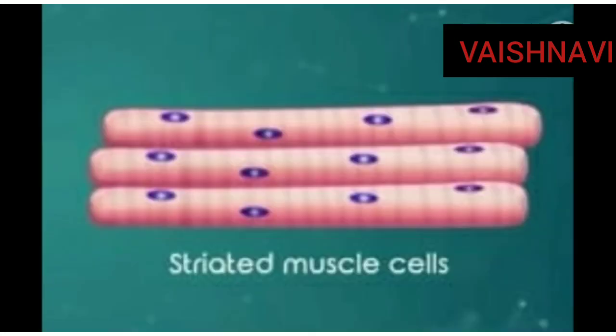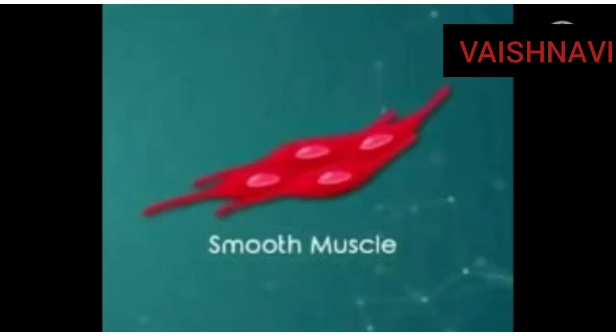First one is striated muscles. Striated muscles are voluntary in nature. These muscles are mostly attached to bones and help in movements. They have alternate light and dark bands. These cells are long, cylindrical, unbranched, and have many nuclei. They are present in lower limbs, hands, eyelids, etc.